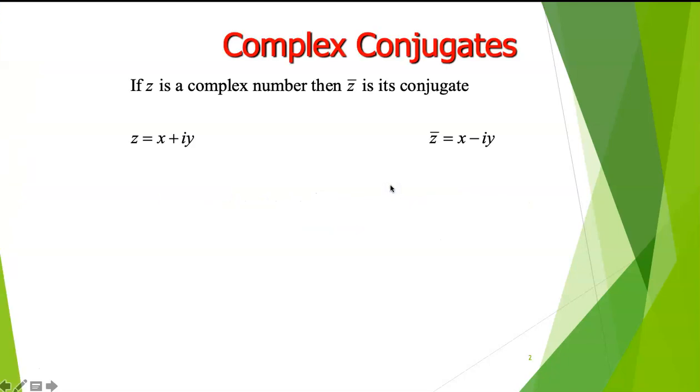So the conjugate of complex numbers, normally if you have a complex number z, the bar on the top of the z will show that's the conjugate of z, or the conjugate number of that. So for example, if you have z equal x plus iy, the conjugate of z will be signed as z bar, and then the conjugate of that is just the opposite sign of the imaginary component. So it will be x minus iy.